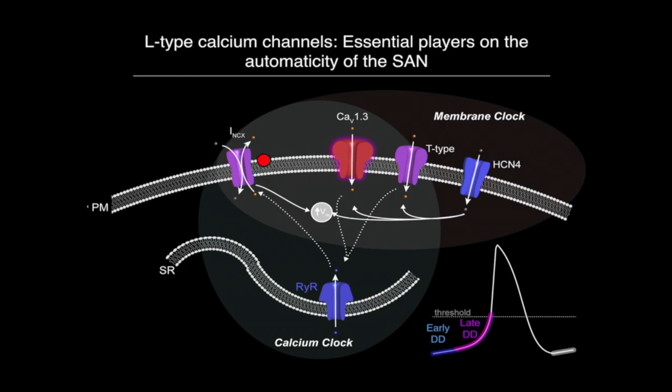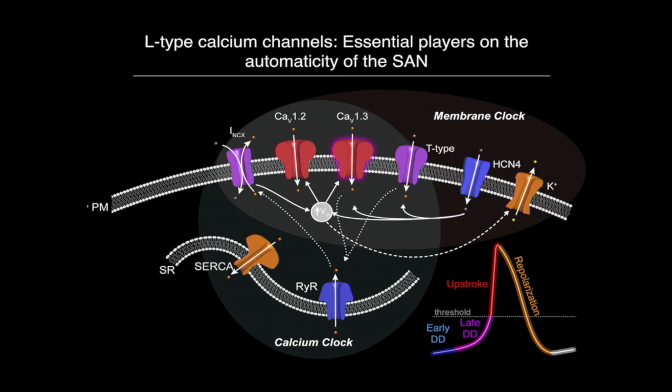We reach threshold and the action potential is fired. Unlike ventricular cardiomyocytes where the action potential spike is driven by sodium, here in the pacemaker the action potential is completely sustained by calcium — specifically L-type calcium channels CAV1.2 and CAV1.3. Once these conductances start to inactivate and potassium channels open, repolarization of the action potential occurs and the cycle starts over again.